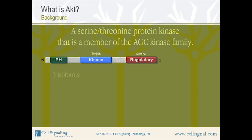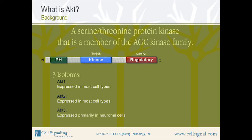There are three isoforms of AKT: AKT1, which is expressed in most cell types; AKT2, which is also expressed in most cell types; and AKT3, which is expressed primarily in neuronal cells.